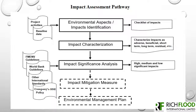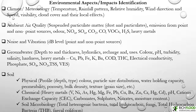The environmental aspects, which are indicators, are the easily observable parameters that indicate the change or deviation that occurs when a project starts. These impact indicators can be used to monitor the various environmental components, which will be explained in the next slides.